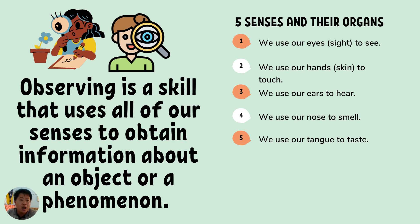So let us recap. Observing is a skill that uses all of our senses to obtain information about an object or a phenomenon. There are five senses and their organs. We use our eyes or sight to see. We use our hands or skin to touch. We use our ears to hear. We use our nose to smell. And lastly, we use our tongue to taste.